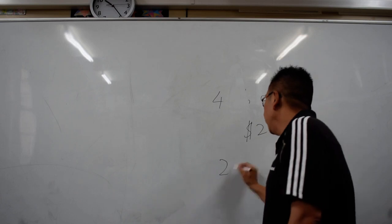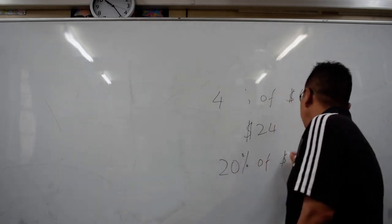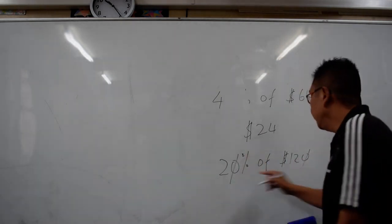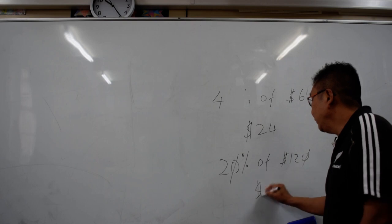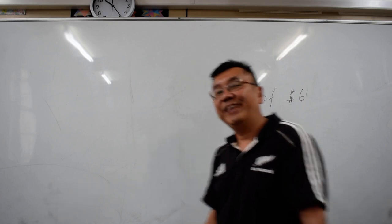Another one, 20% of $120. So what do you do? You take away the 0, take away the 0, 2 times 12. That will give you $24. Thank you and have a good day.